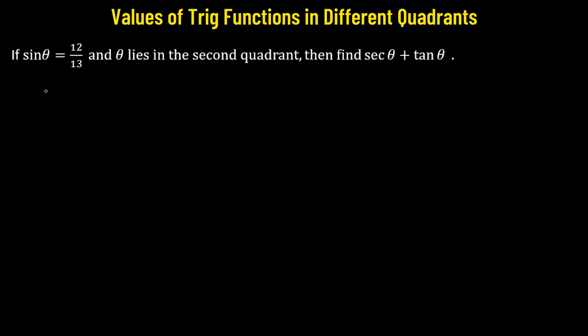In this problem, we are provided with the value of sine theta, that's positive 12 over 13, and the condition that theta is going to lie in the second quadrant. We will need to find out the value of secant theta plus tangent theta. So let's begin.